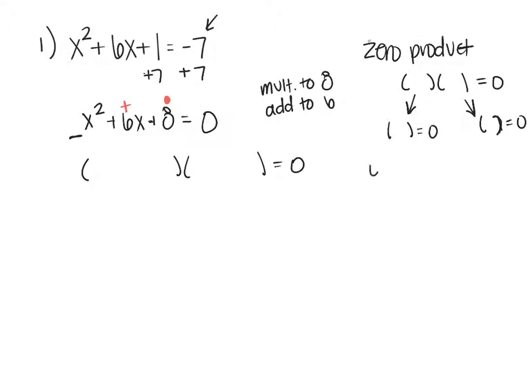My factors of 8, numbers that multiply to give me 8, are 1 and 8, and 2 and 4. There's no need to rewrite them with the order reversed. I'm looking for the pair that will add to 6. 2 and 4 are the only ones that add to 8. So I've got 2 and 4, x and x, because I also have to multiply to x squared. The only way to split it up is x and x.